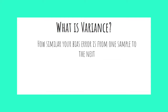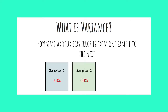Now consider a different model which also made predictions on 3 random samples of 100 data points. In sample 1, 78 predictions were correct; in sample 2, only 64 were correct; and in sample 3, 88 predictions were correct. We could say this model suffers from high variance, as each sample produces very different bias errors.